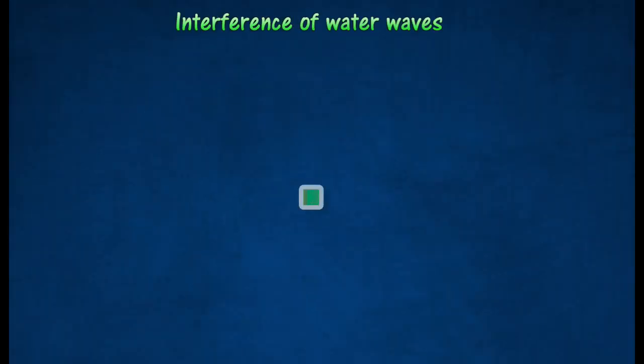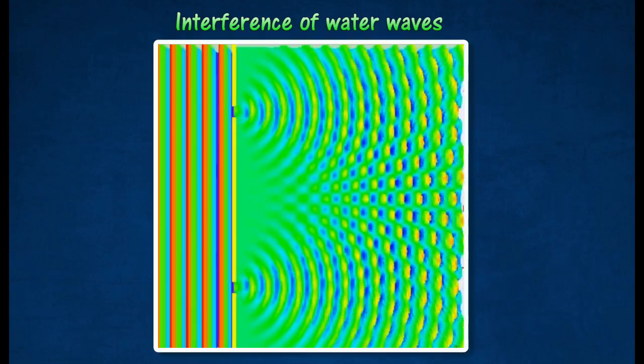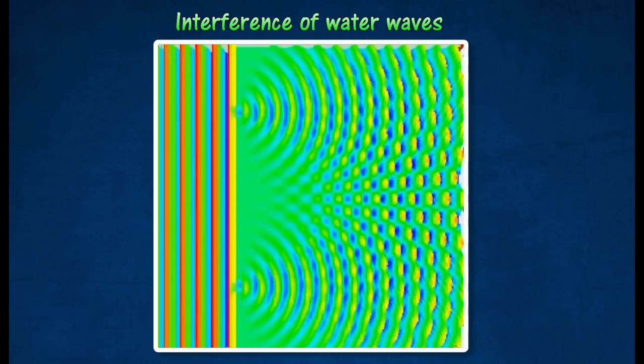When water in a ripple tank is disturbed by two coherent sources, the uniform pattern of ripples can be observed as shown in the diagram.